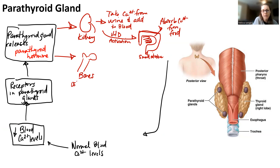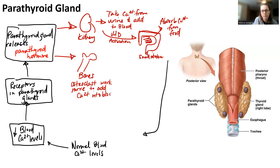At the bones, our osteoclasts are going to work harder. Remember, osteoclasts break down bone. So what that does is it takes calcium out of the bones and puts it into the blood.